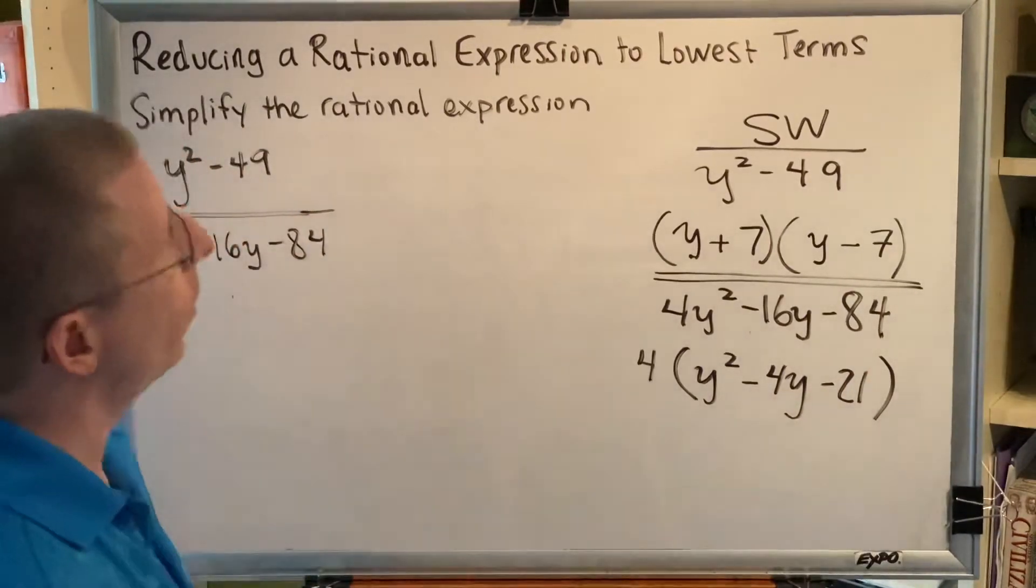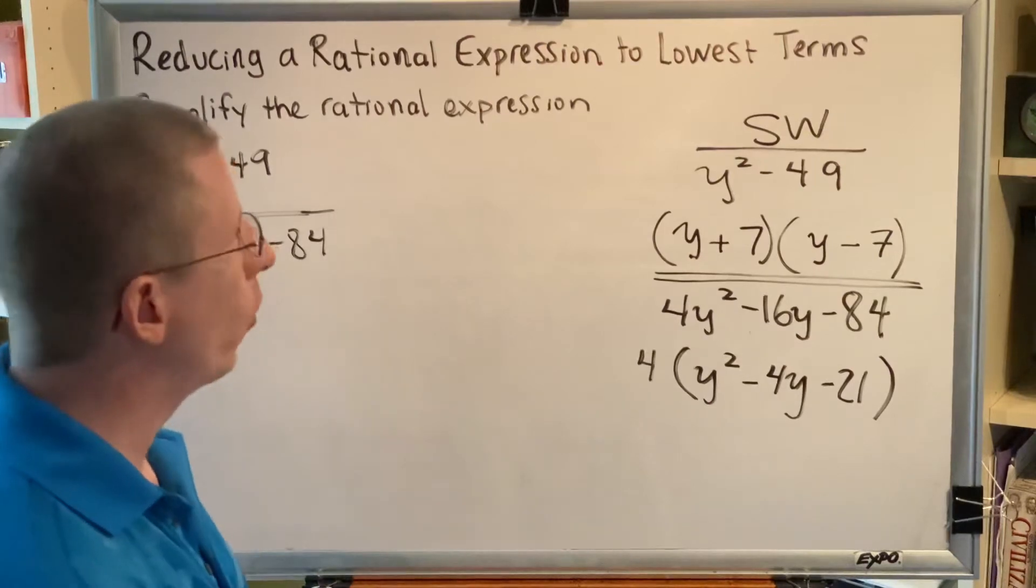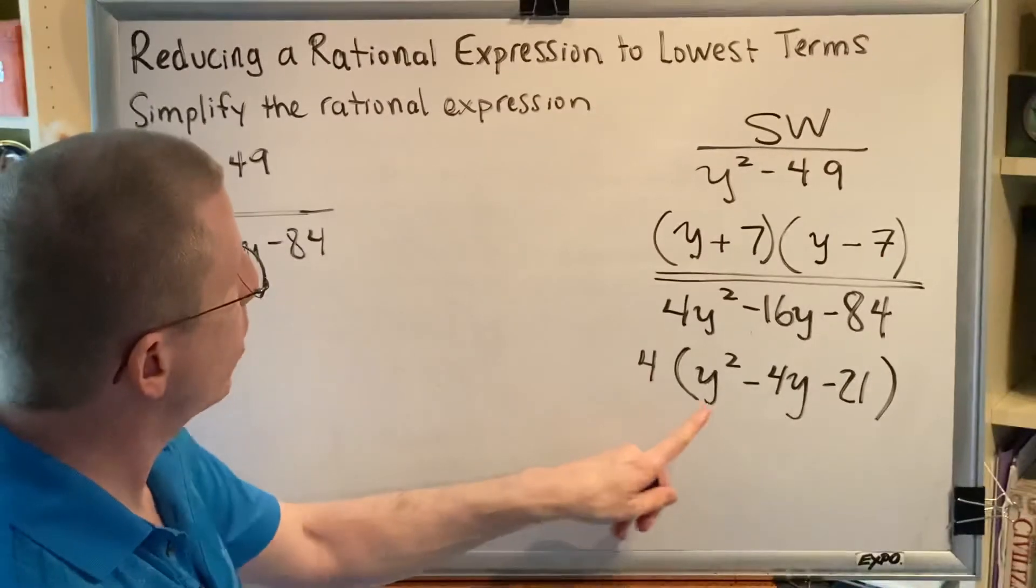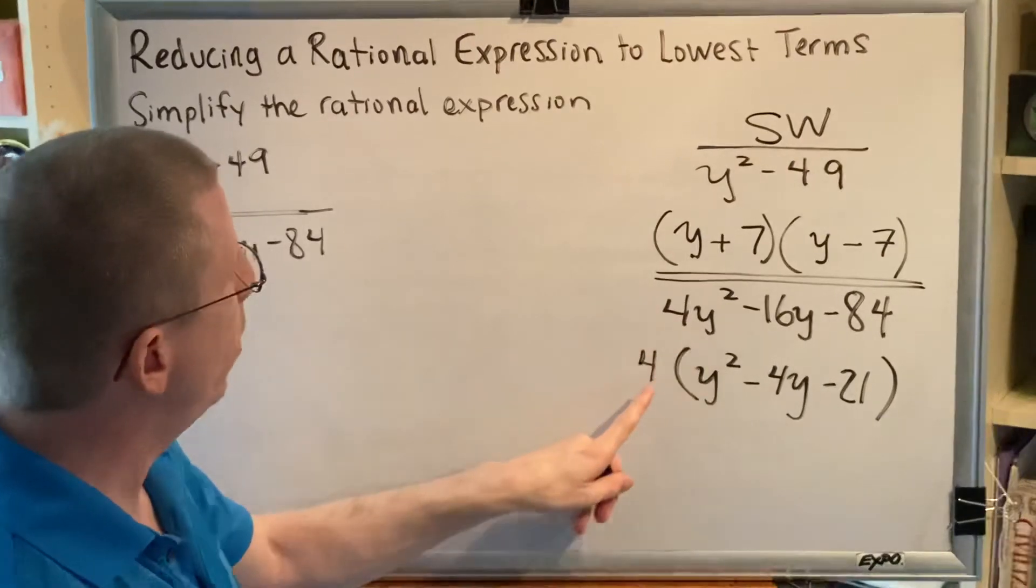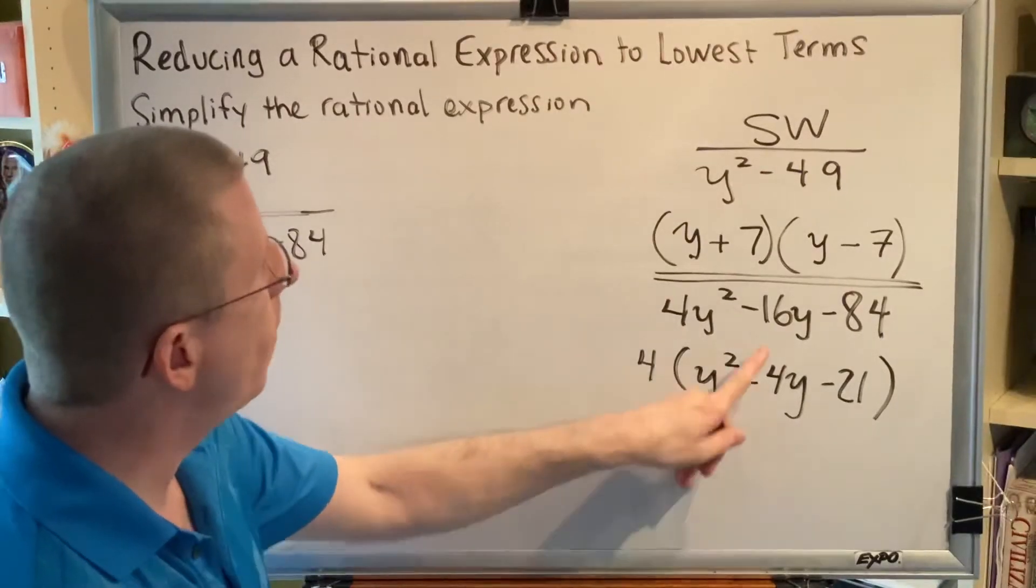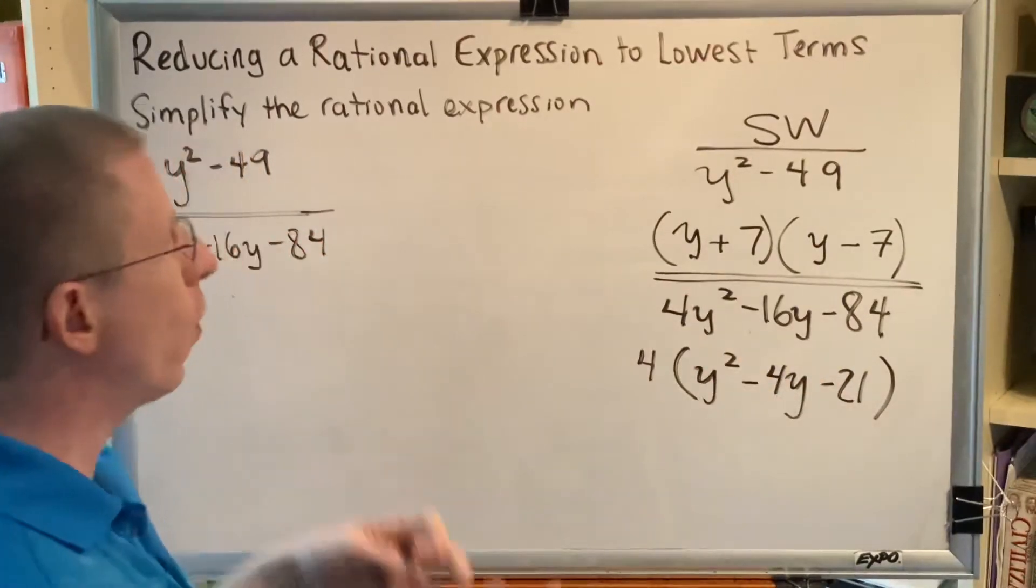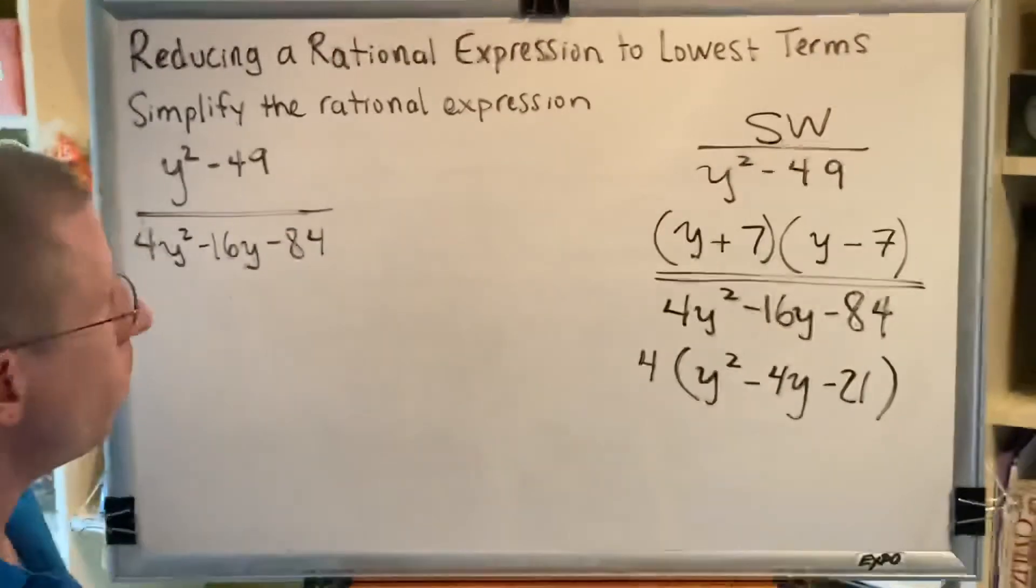If we want to know whether we've factored correctly, we can check it with FOIL or the distributive property. In this case, it's the distributive property. So 4 times y squared makes 4y squared. 4 times negative 4y makes negative 16y. 4 times negative 21 makes negative 84. These are equal to each other.